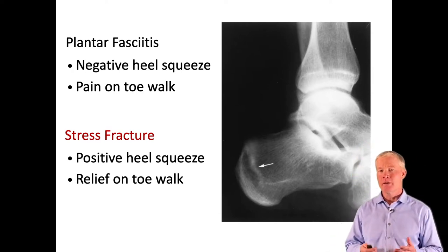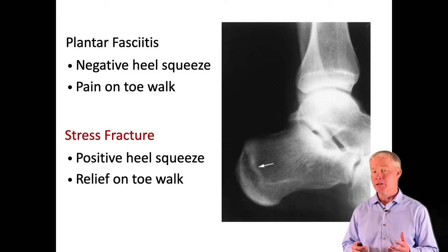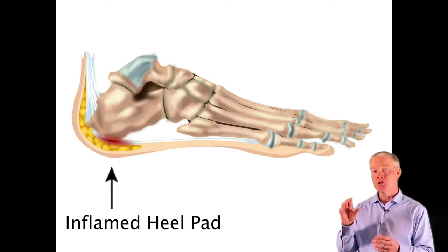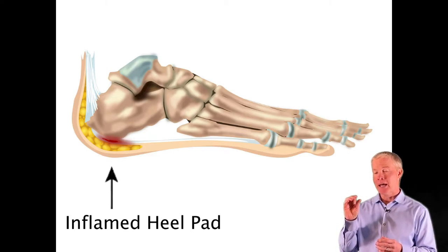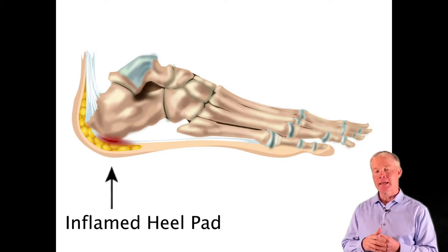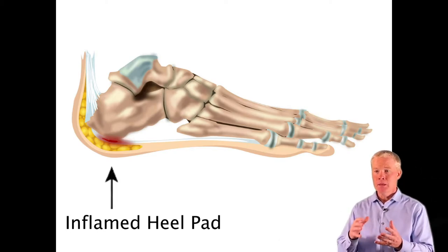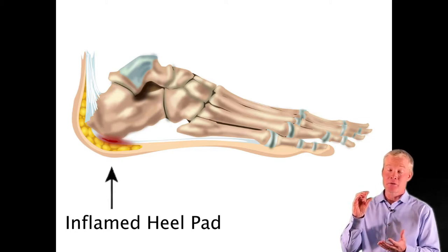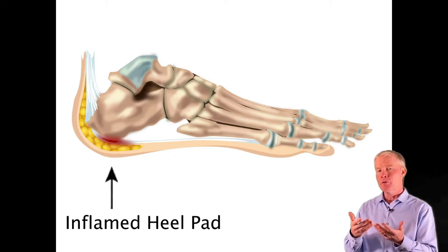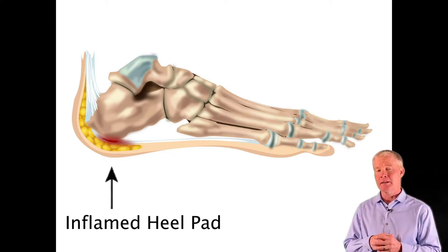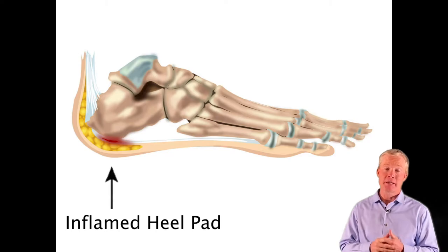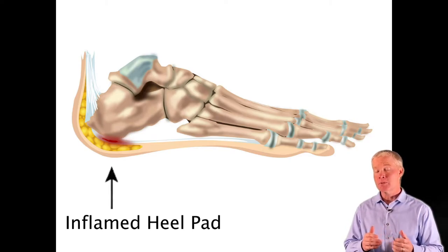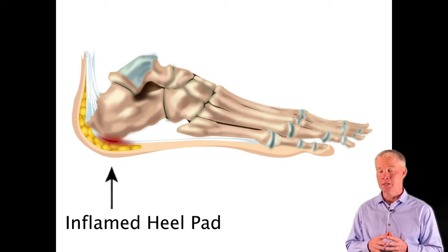Another condition affecting something very close to the calcaneus is the heel fat pad — a shock-absorbent fat pad beneath the inferior calcaneus that helps dissipate forces. Over time, it can degenerate like so many other tissues. As it thins, forces are directed more into the calcaneus, and both the fat pad and the calcaneus become irritable. This condition has become much more commonly recognized in recent years.